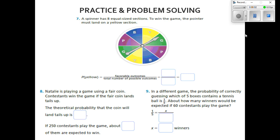All right guys, it's time to go over the homework for understanding theoretical probability. In scenario number seven, the spinner has eight equal-sized sections. To win the game, the pointer must land on a yellow section.